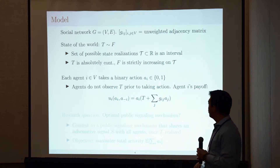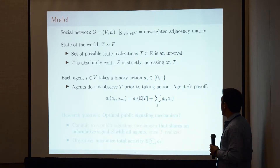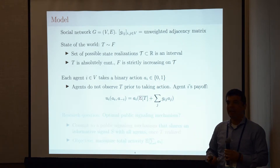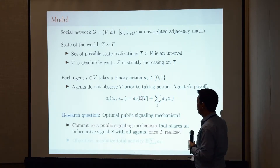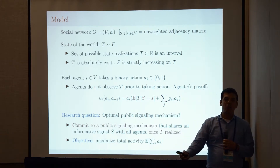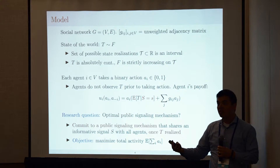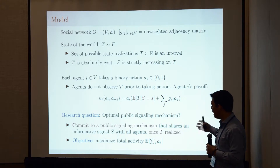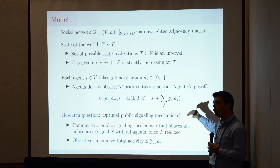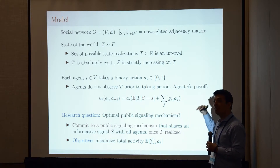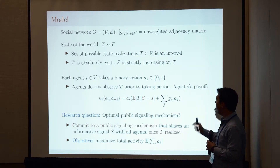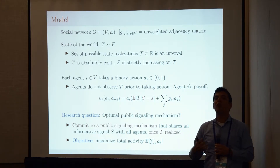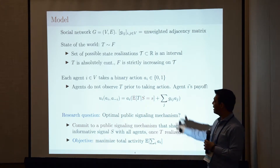In the absence of any information about the state t, agents take actions that maximize their expected payoffs. But suppose agent i has access to some random variable correlated with the state — a signal informative about the underlying state. Then the agent updates her posterior and possibly takes different actions. We think about the design question: an information designer chooses the signal or mechanism that shares signals with agents in the network to influence their behavior.